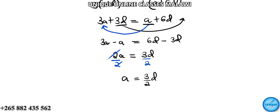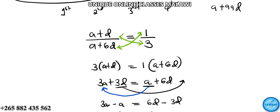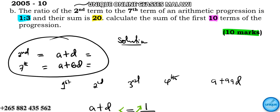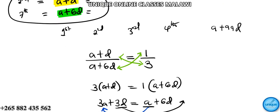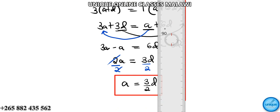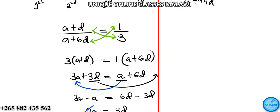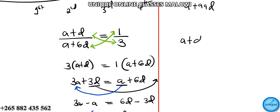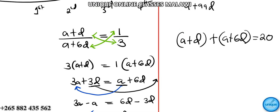We have found that 'a' in terms of 'd' is a equals 3d over 2. Now we can use the second part of the question — the sum of the second term and the seventh term equals 20. So we write: (a + d) plus (a + 6d) equals 20. Combining like terms: 2a plus 7d equals 20. This is equation number two.